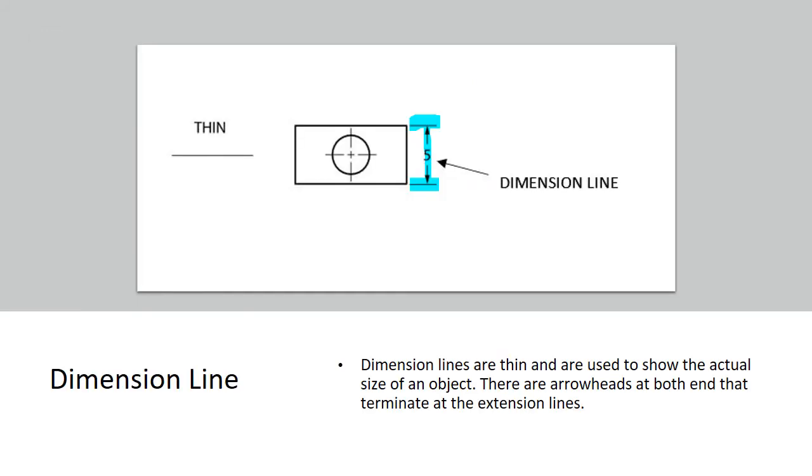Here we've got a dimension line. Dimension lines are thin and are used to show the actual size of an object. There are arrowheads at both ends that terminate at the extension lines. Dimension lines and extension lines go together. The dimension line is just that line with the arrows and the number in between. But the little lines at the end, those are called extension lines.